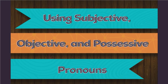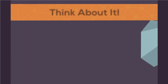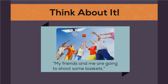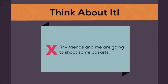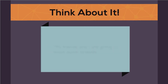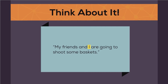Like most of the lessons, this one begins with a short introduction to the topic. Have you ever heard someone say, 'My friends and me are going to shoot some baskets'? Did that sound wrong to you? It should have. Not that there's anything wrong with shooting baskets — it's the pronoun that's all wrong. The right way to say that is, 'My friends and I are going to shoot some baskets.'